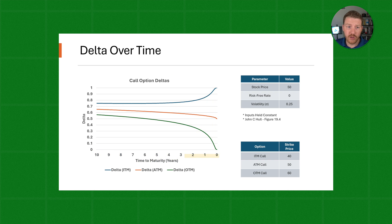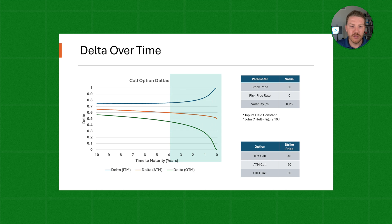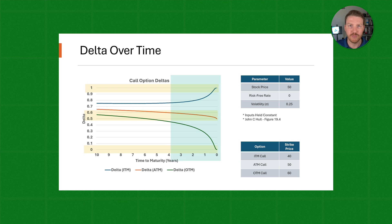On this graph, the leftmost part of the X-axis shows time to maturity in years equal to 10, and as we move to the right we go all the way to zero. When there are still 10 years left to maturity, all of these call options have Deltas that are pretty close together — all within about 0.2 of each other. As time to maturity passes, they deviate massively: the in-the-money call option approaches 1, the out-of-the-money call option approaches 0, and the at-the-money call option approaches 0.5 as we reach the expiration date.